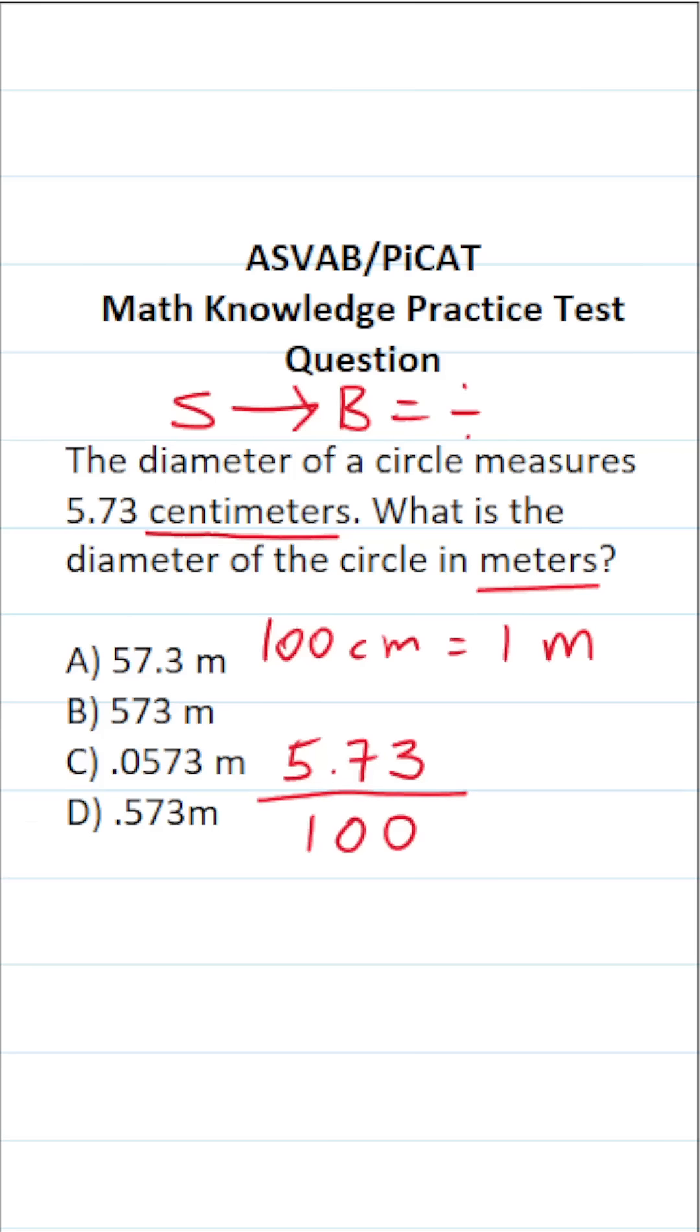Now, you might be saying to yourself, do I really have to do the long division? And the answer to that is no. Whenever you divide something by a power of 10, such as 10, 100, and 1,000, and so on, all you do is take the decimal in the number you're given, and you shift it to the left according to how many zeros by which you're dividing.